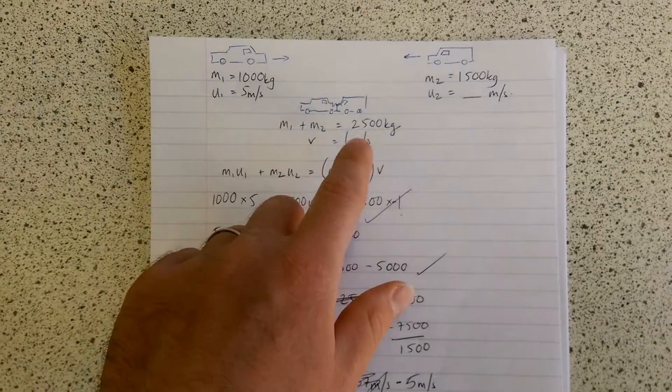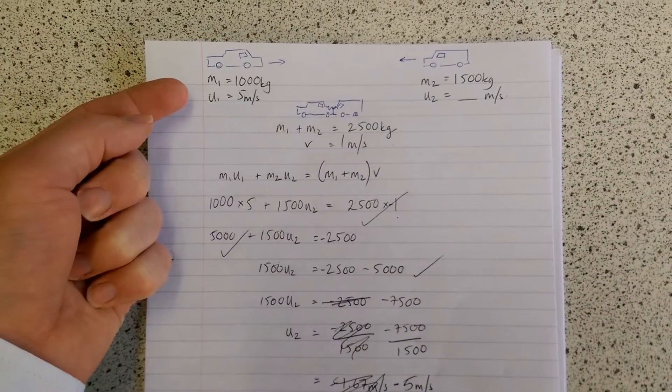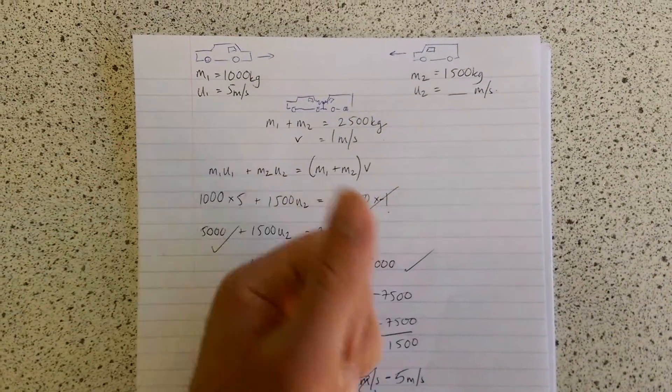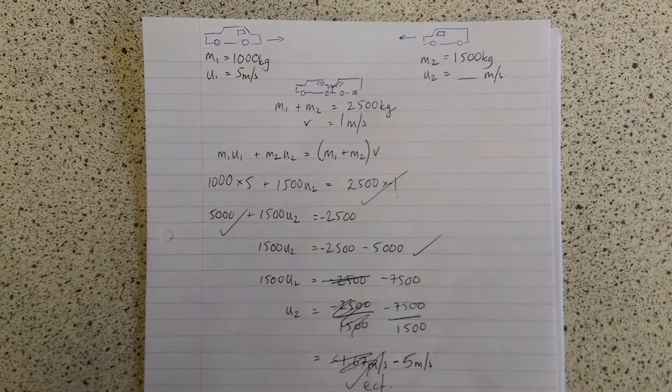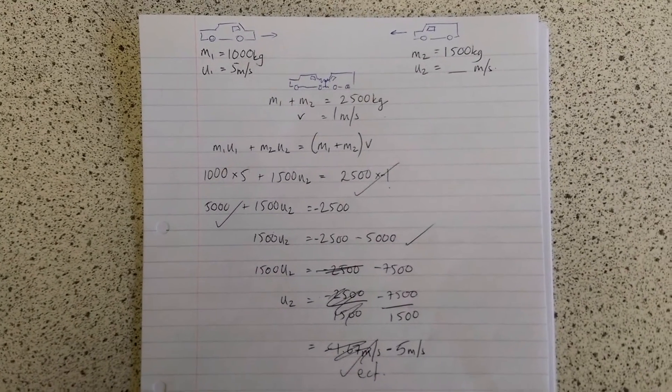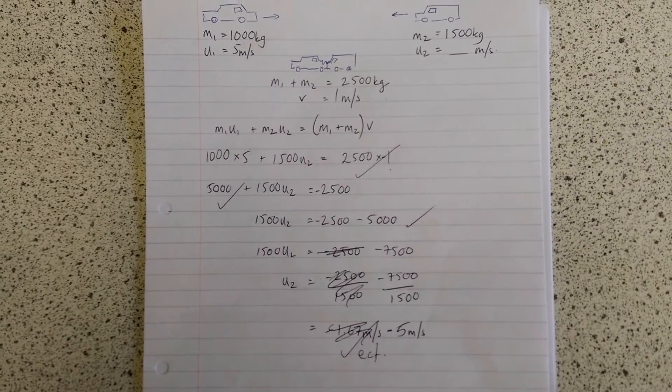Because this is moving in this direction here and I'd called this 5, then this direction to the left is negative. So that had the velocity - velocity is a vector, don't forget - that velocity was minus 1.